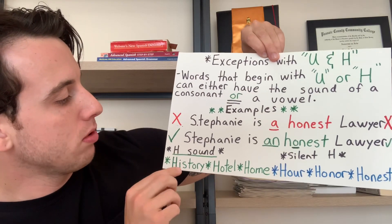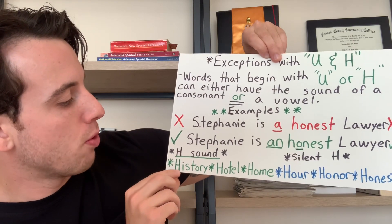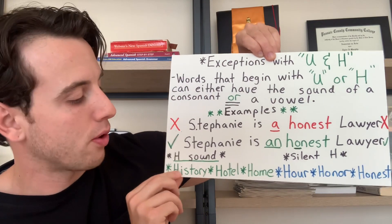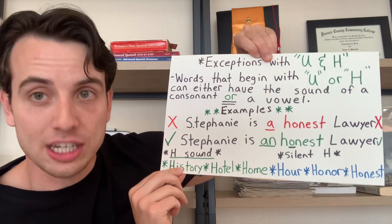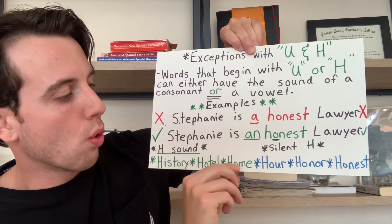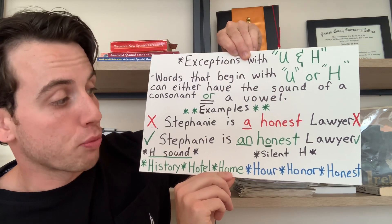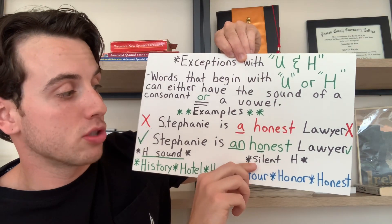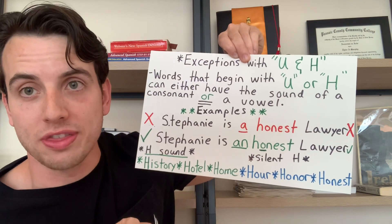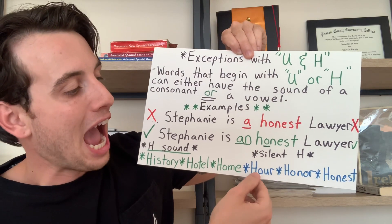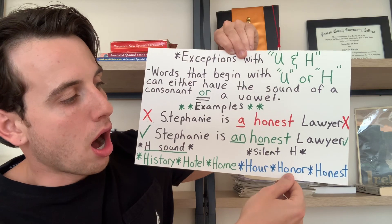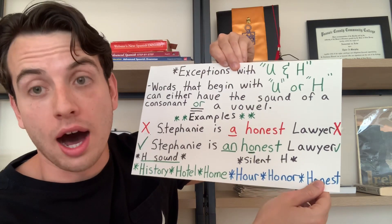Some examples of words beginning with H with the H sound: history, hotel, or home. And three more examples with a silent H — with the vowel sound: hour, honor, and honest.